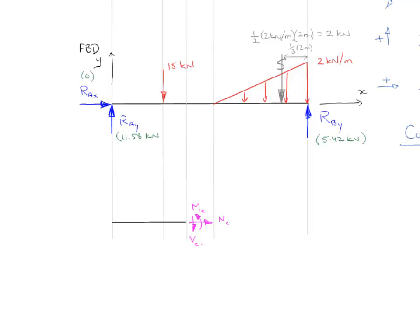Now to complete my free body diagram, of course what I'm going to have to do is I'm going to have to add all of the other external forces that exist on that section. So in this case we have our point load here of 15 kilonewtons.